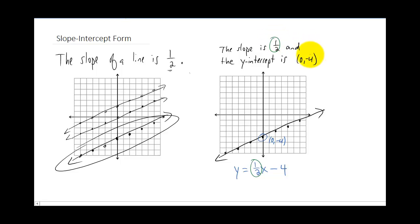And it's also not a coincidence that this line has a y-intercept that goes through zero, negative four, and that we're subtracting four from the one half x.